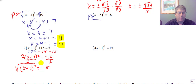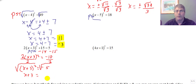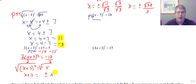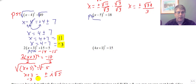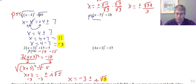We take the square root of both sides, which leaves us with x plus three equals the square root of negative five. We've already worked with imaginary numbers, so that is simply plus or minus i times the square root of five. Then we subtract three from both sides, and our final answer becomes x equals negative three plus or minus i square root of five.